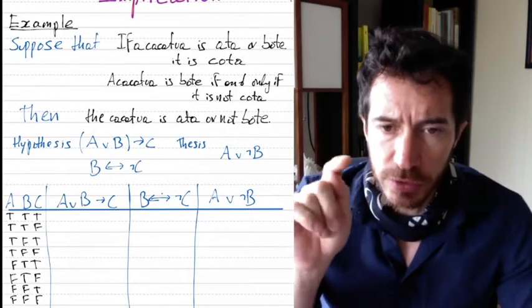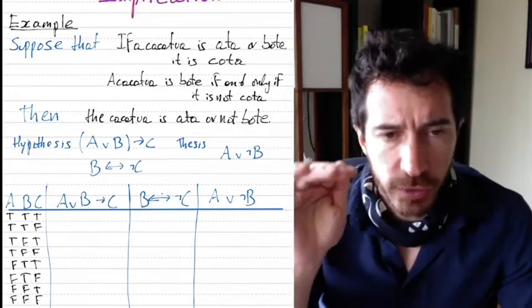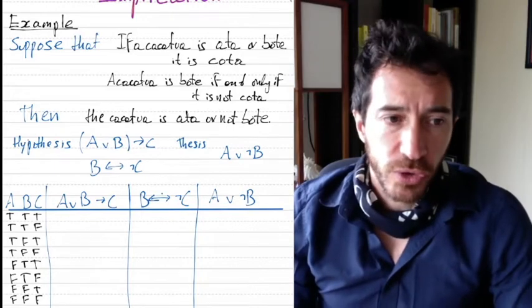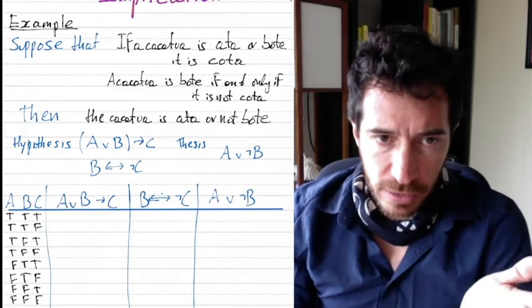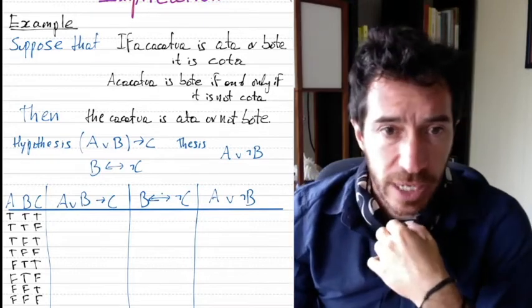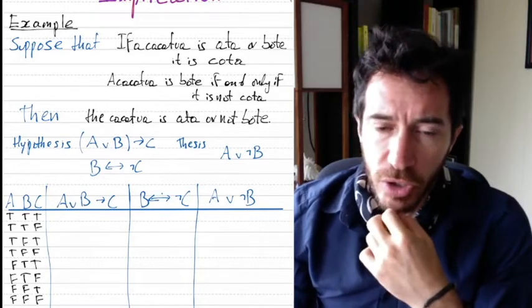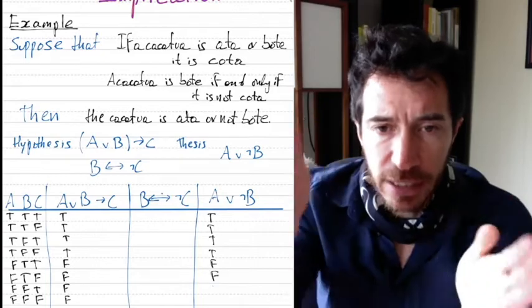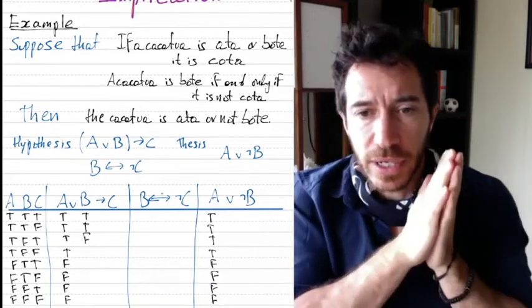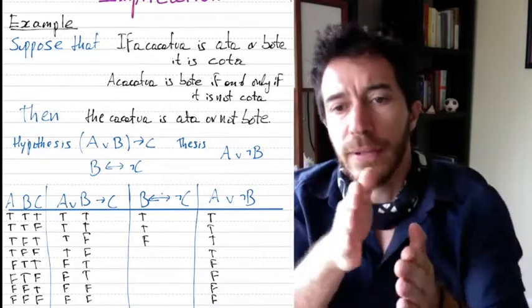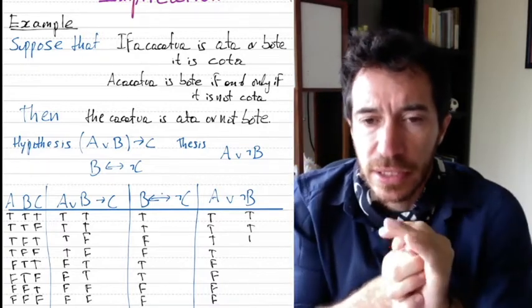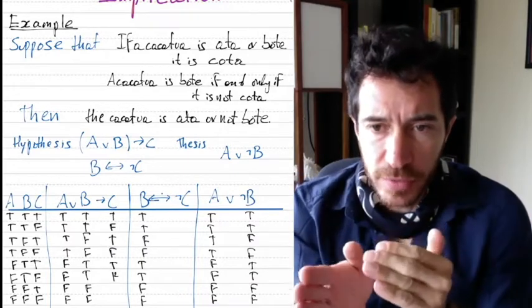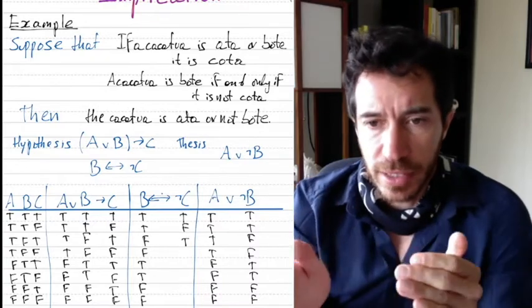We list all eight combinations: true-true-true, true-true-false, true-false-true, true-false-false, and so on. Now we deduce the values for the other three formulas depending on these truth assignments. First, we copy the column for A, then the column for B, then the column for C — just copying exactly what the first assignment was. Now we move on to the logical symbols.